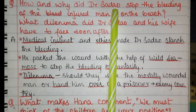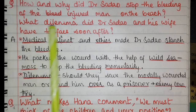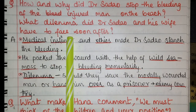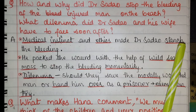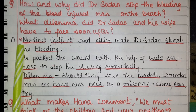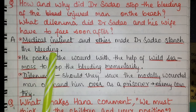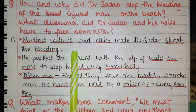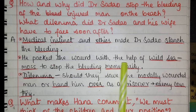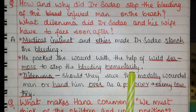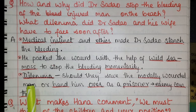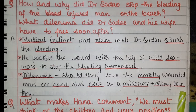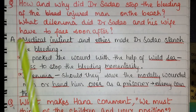How and why did Dr. Sadao stop the bleeding of the injured man on the beach, and what dilemma did Sadao and his wife face? Medical instinct and ethics made Dr. Sadao stanch — meaning stop — the bleeding. He didn't first consider who the man was, whether from America, Korea, or elsewhere; the first thing was that there was a patient in front of him whom he had to treat as a doctor. He packed the wound with wild sea moss to stop the bleeding momentarily. After that, the dilemma arose because the man was a prisoner of war from an enemy country.